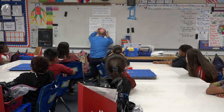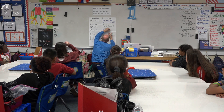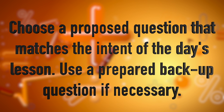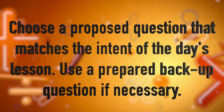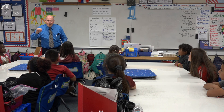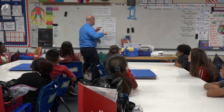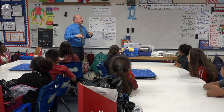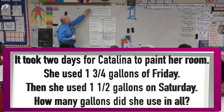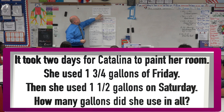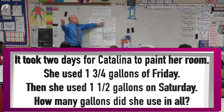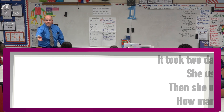How much paint did she use in all? Let's start — who did this one? Tell me your name. Aleah. So let's begin by working on Aleah's question. I'm going to read the whole story complete with Aleah's question: It took two days for Catalina to paint her room. She used one and three-quarters gallons on Friday. She used one and a half gallons on Saturday. How many gallons did she use in all? That's the question we're going to work on.